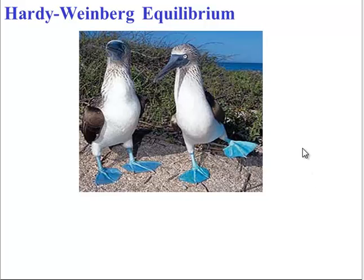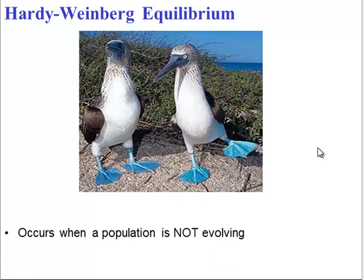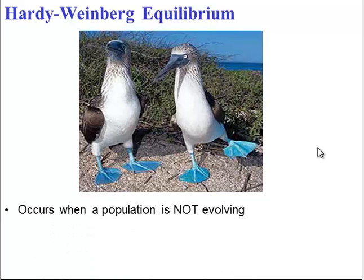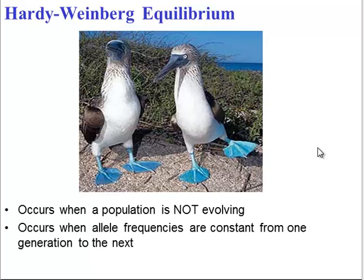Let's start by looking at the opposite of evolution. The opposite of evolution is equilibrium, specifically Hardy-Weinberg equilibrium. If a population is in equilibrium, it is not evolving, and thus its allele frequencies are constant from one generation to the next.